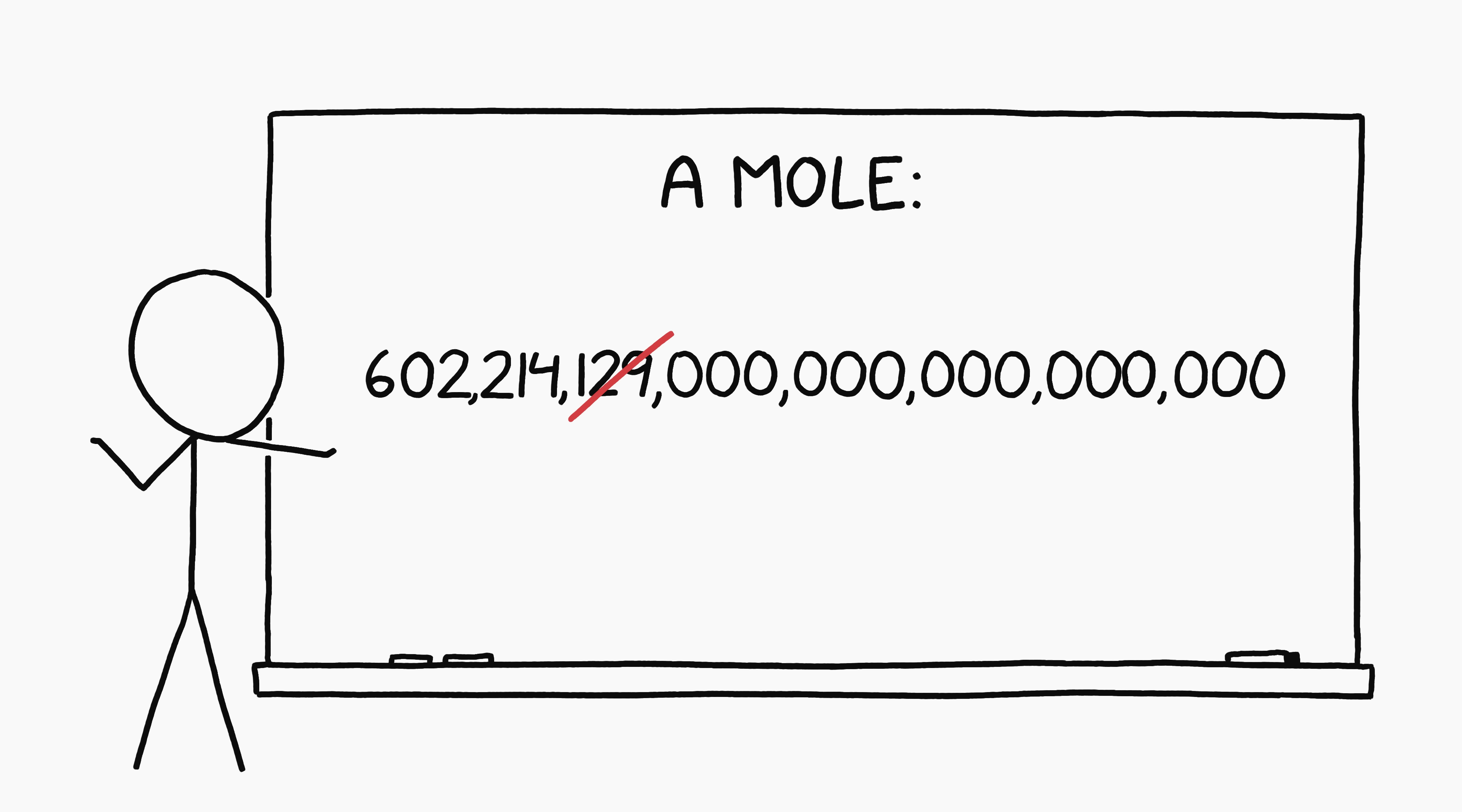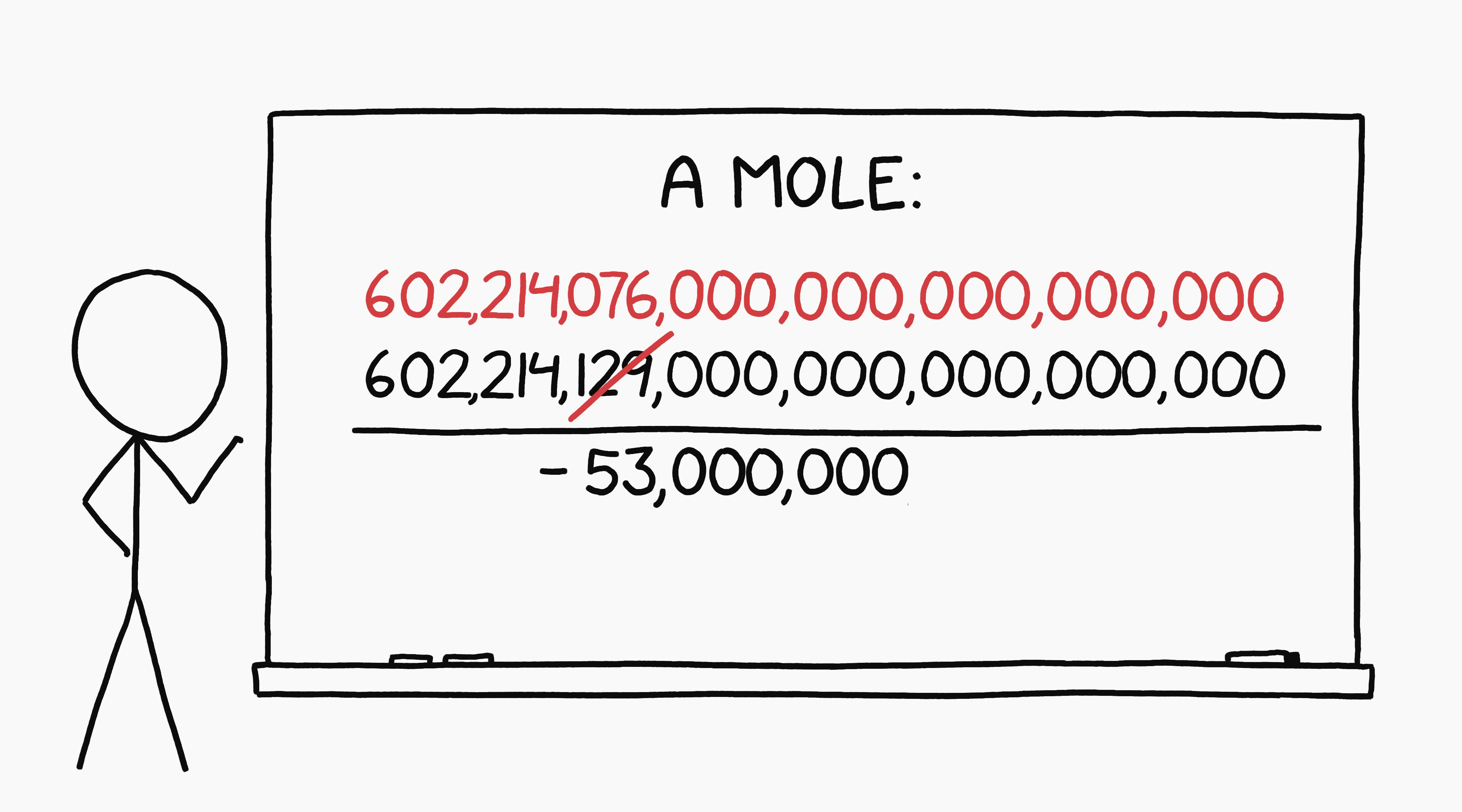Whoops, nope, update. The SI recently redefined the mole based on more accurate measurements, and now it's 602 sextillion, 214 quintillion, 076 quadrillion. Put one way, a mole is now 53 quadrillion less than it used to be. Put another way, a mole is now 0.00009% smaller than it used to be.